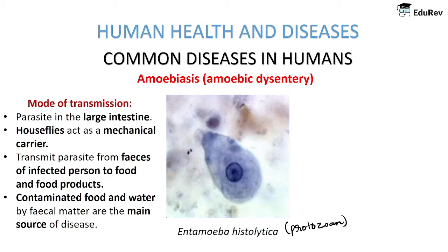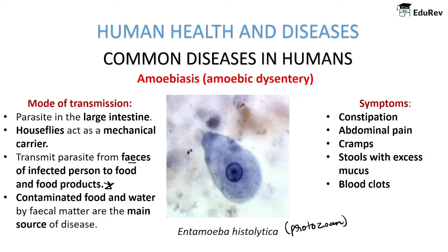House flies transmit this parasite from the feces of an infected person to food and food products on which they sit. Consumption of contaminated food and water by fecal matter is the main source of this disease.